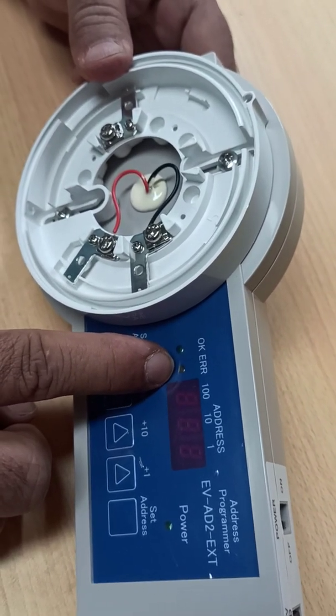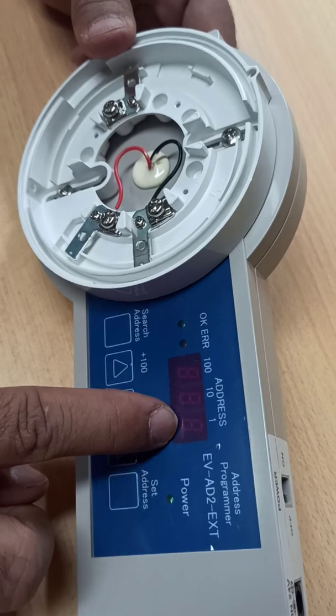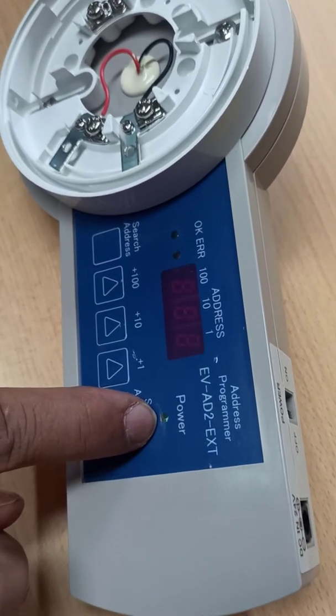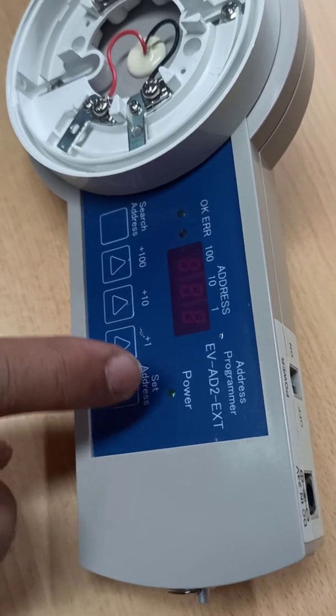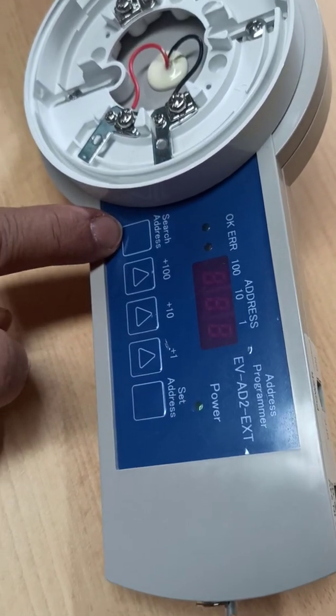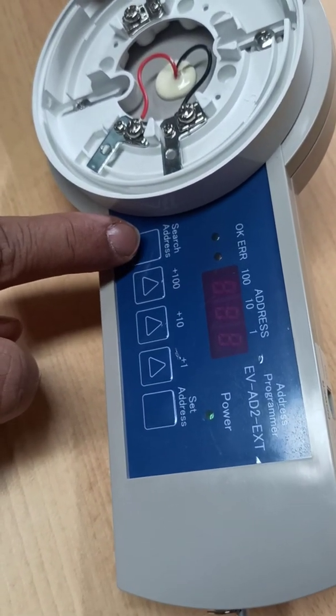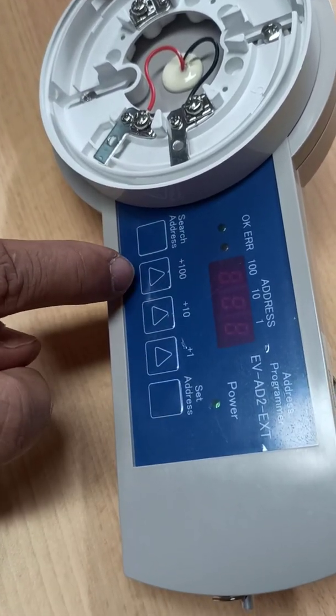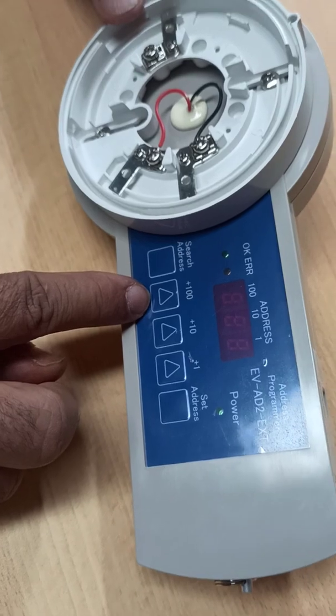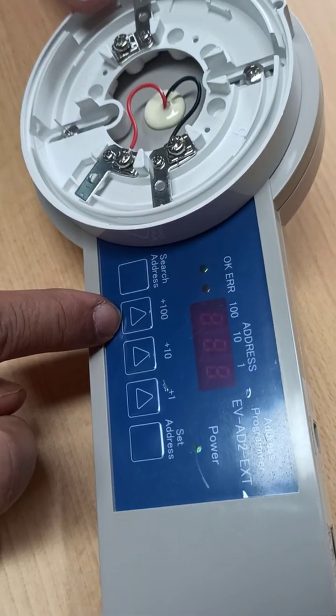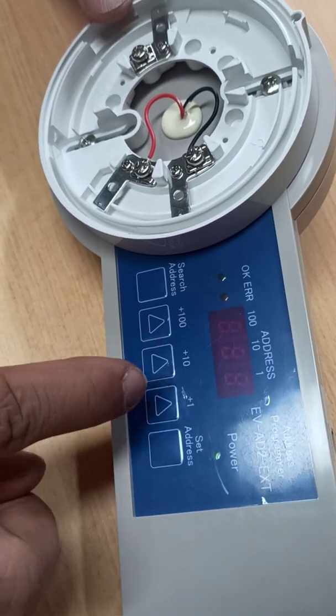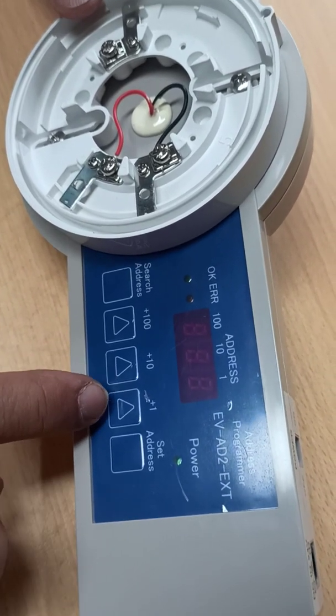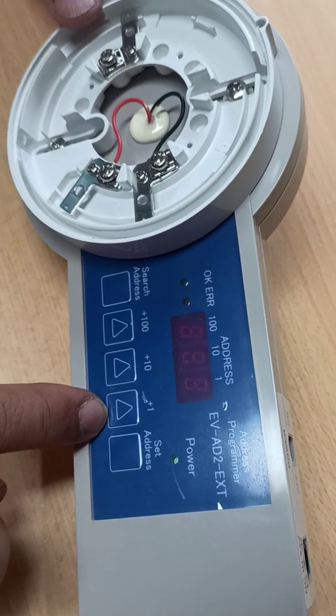Error is the orange light, and this is the seven segment display. This is the power indication. If power is OK then it is green. This is the search address. When we press this it will start transmitting the address which will display here. Plus 100 - when you press it the address will increase by 100. Plus 10 - address will increase by 10. Plus 1 - address will increase by 1.